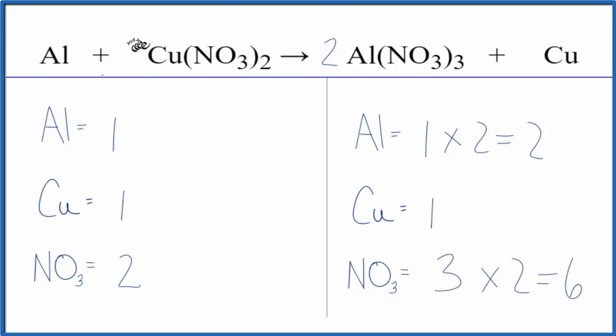So now it looks like we need to put a three in front of the copper 2 nitrate. One times three, three copper atoms, but we have two times one, so two nitrates times three. Two times three that gives us six.